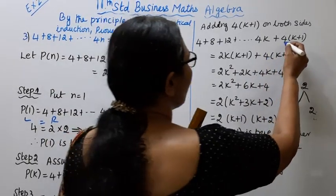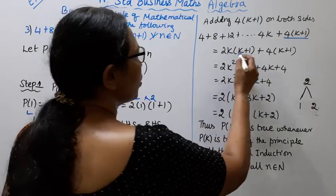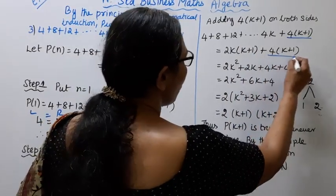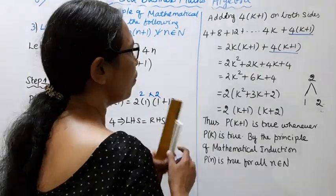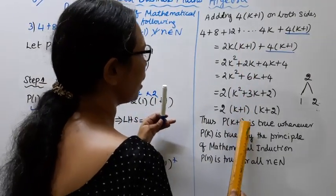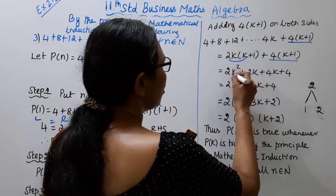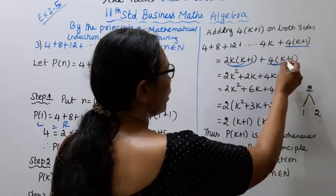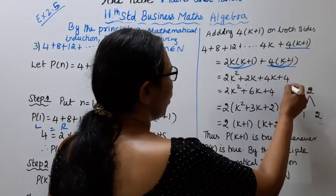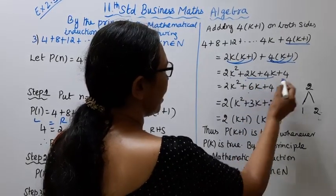Adding 4(k + 1) to both sides: 2k(k + 1) + 4(k + 1) = 2k² + 2k + 4k + 4 = 2k² + 6k + 4.